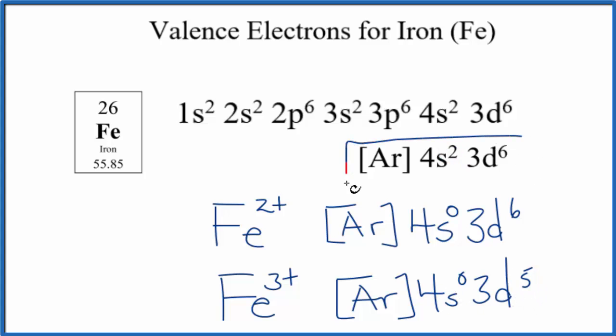So to recap, we wrote the condensed electron configuration for iron. We looked at these outside that noble gas core. These are our valence electrons. This is Dr. B looking at the electrons for the transition element, iron, Fe.